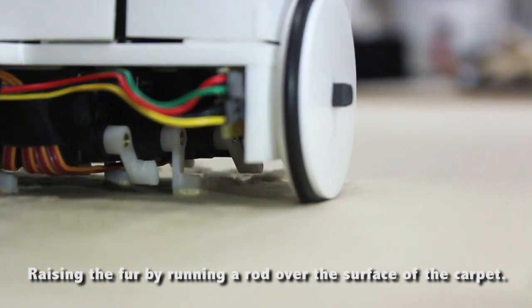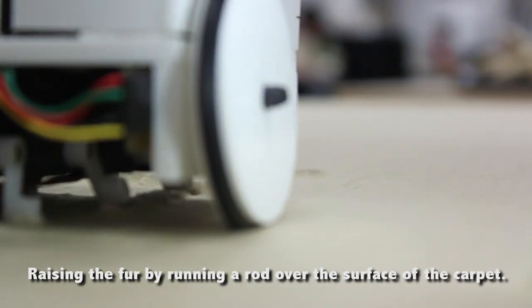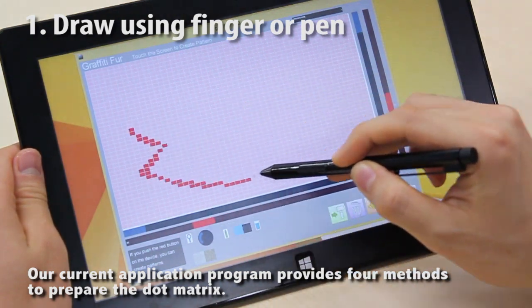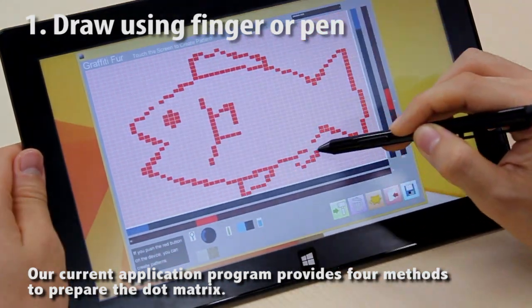The rotary encoder measures the horizontal movement. Our application provides four methods to prepare dot matrix for drawings.